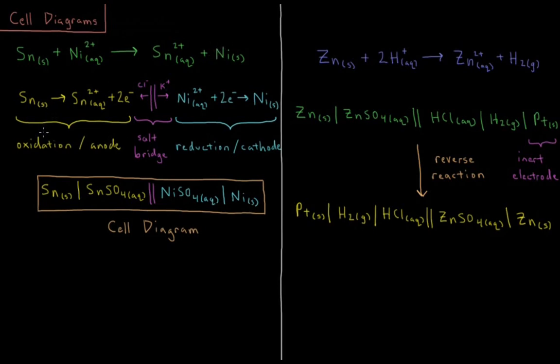We can break this up into two half cell reactions. We have on the left the oxidation, the loss of electrons which occurs at the anode. We have tin solid reacting to form tin 2+ aqueous cations, plus two electrons.